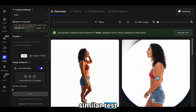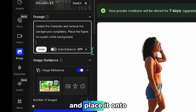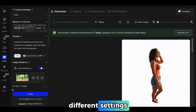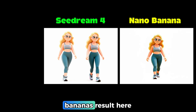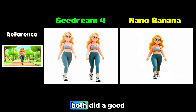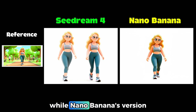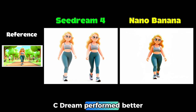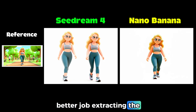Now we'll do a similar test, but this time using an animated image. I'm asking to extract the main character and place it onto a separate background. This is very important for story generation because in some scenes, you need to take characters and put them into different settings. Here's the result from Seedream, and here's the one from Nano Banana. Both did a good job isolating the character, but Seedream made the character appear slimmer, while Nano Banana's version looks more realistic. In this animation test, I'd say Nano Banana did a better job extracting the character.